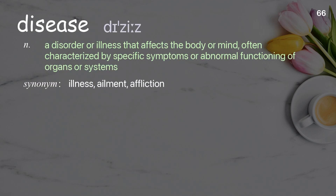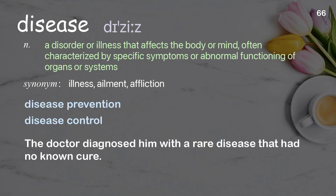Disease. A disorder or illness that affects the body or mind, often characterized by specific symptoms or abnormal functioning of organs or systems. Examples: disease prevention, disease control. The doctor diagnosed him with a rare disease that had no known cure.